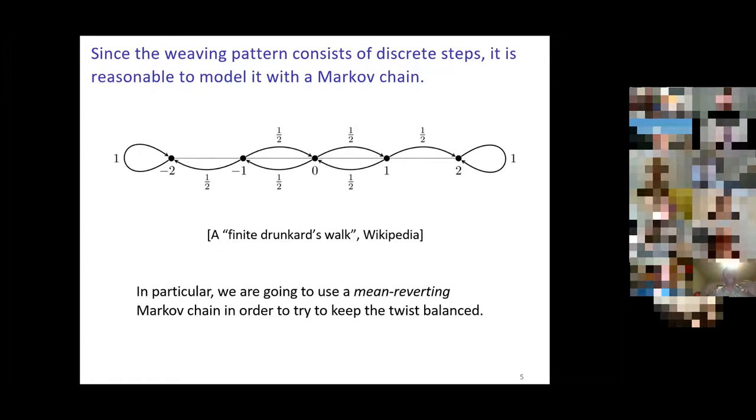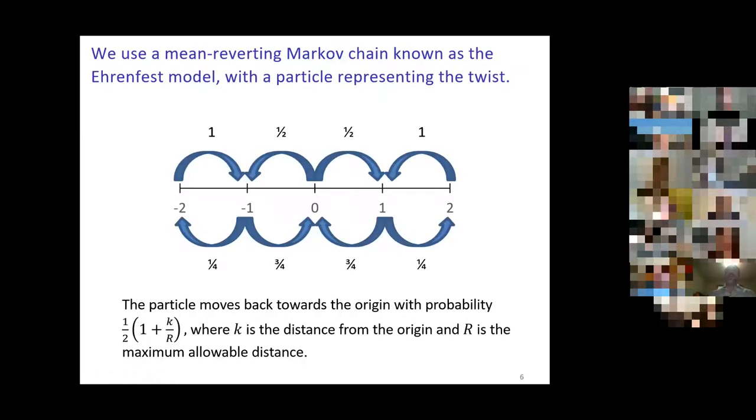The one I'm going to use is a mean-reverting Markov chain, which means that the farther away you get from zero, the more likely it is to move back towards zero. I've chosen to do this in just about as simple a way as possible. This has a fairly long history—it was originally used to model diffusion in gases. There's an urn model for it, moving balls back and forth between different urns with probabilities. The idea basically is that if you're at the origin, you have a 50% chance of moving in each direction. If you're not at the origin, you're slightly more likely to move back towards the origin, and the farther away you get from the origin, the more likely you are to move back towards it.